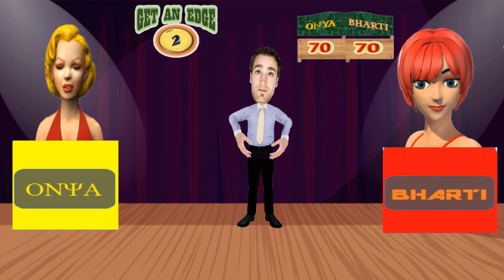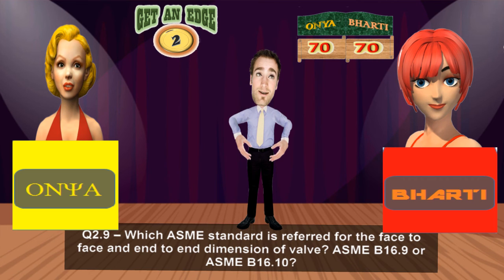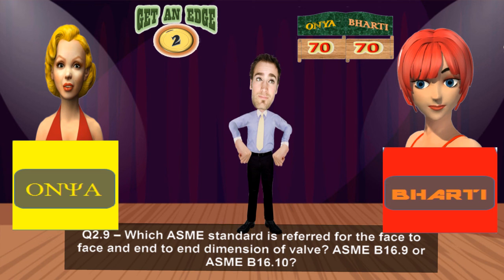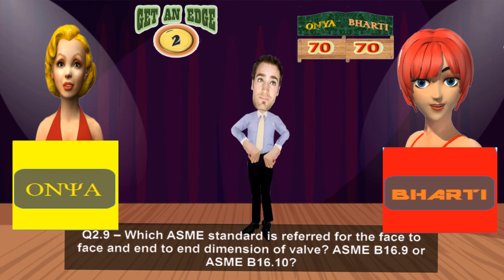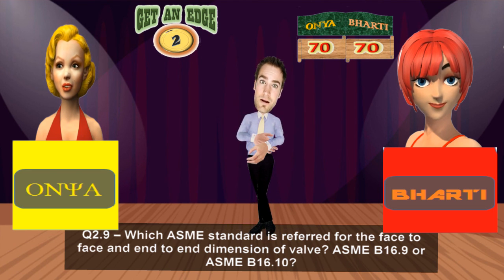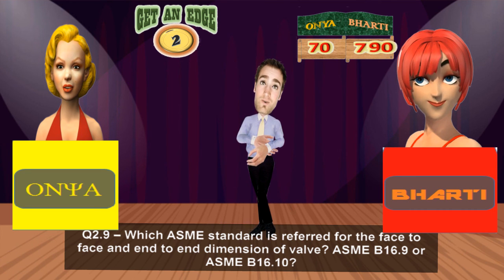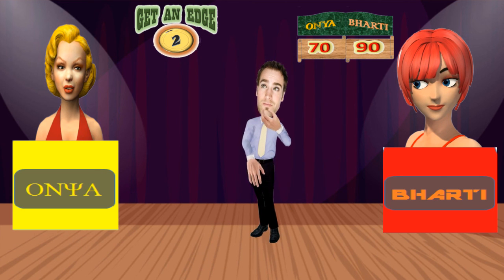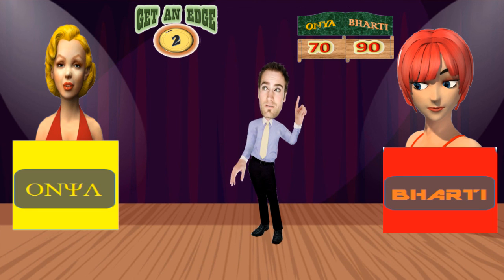Coming to the 9th question for Ms. Barty: Which ASME standard is referred for the face-to-face and end-to-end dimensions of valves — ASME B16.9 or ASME B16.10? Face-to-face and end-to-end dimensions of valves shall be referred by ASME B16.10. That's correct, Ms. Barty. You earn 20 points and move to a total of 90 points. If Ms. Onya answers the last question correctly, the score will be tied and we enter a tiebreaker.